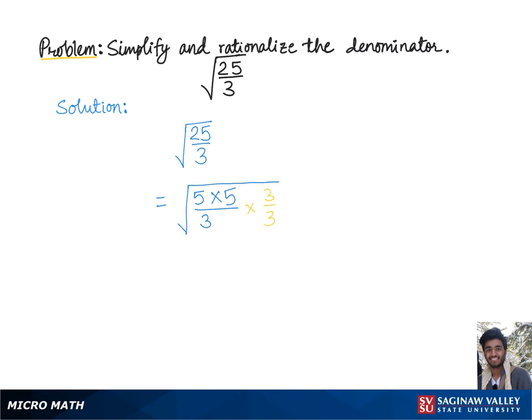And we have the whole expression under square root. Now this 5 times 5 can be written as 5 squared. And we already have times 3 over, again this 3 times 3 can be simply written as 3 squared. And we have the whole expression under the square root.